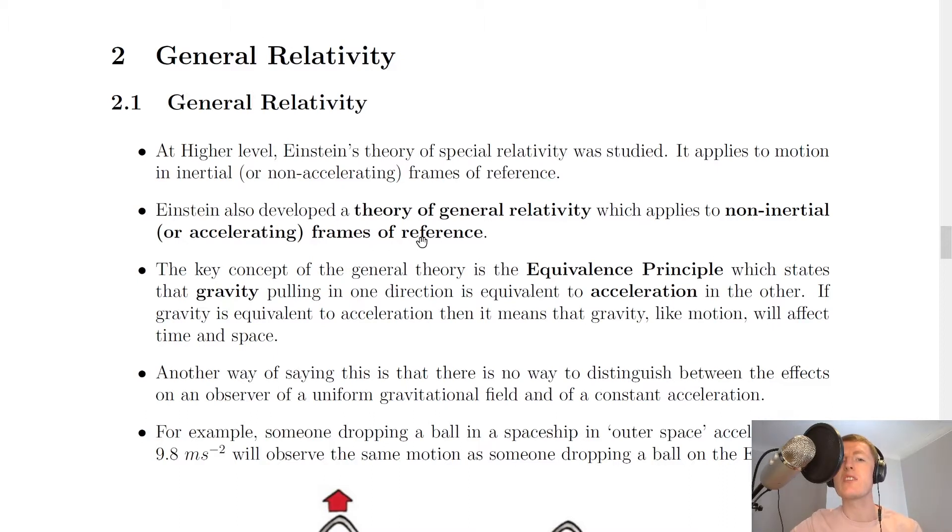It then says here that Einstein also developed a theory of general relativity which applies to non-inertial or accelerating frames of reference. So the difference between general relativity and special relativity is that general relativity considers frames of reference which are accelerating with respect to each other, whereas special relativity considers frames of reference which are not accelerating with respect to each other. One frame of reference would be moving at a constant speed or stationary with respect to the other frame of reference.